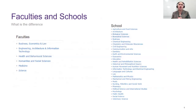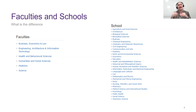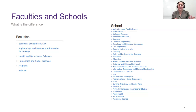Here at UQ we have faculties and schools. There are six faculties: Business, Economics and Law; Engineering, Architecture and Information Technology; Health and Behavioural Sciences; Humanities and Social Sciences; Medicine; and Science. These are overarching organisations. Within faculties there are different schools and institutes. For example, Pharmacy falls under Health and Behavioural Sciences, and Chemical Engineering falls under Engineering, Architecture and IT. You might be in one school but have courses in other schools.